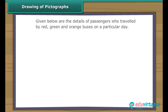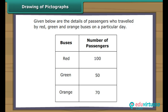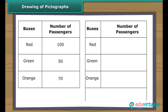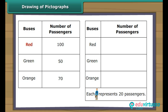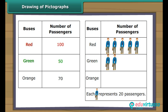Drawing of pictographs: let us draw a pictograph with the help of the given data, using the picture of a travelling man to represent bus passengers. As the numbers are large, we use one picture to represent 20 passengers. The red bus carried 100 passengers — five pictures represent 100 passengers. The green bus carried 50 passengers: represent 40 passengers with two pictures and the remaining 10 passengers with half a picture. The orange bus carried 70 passengers: represent 60 passengers with three pictures and the remaining 10 passengers with half a picture.